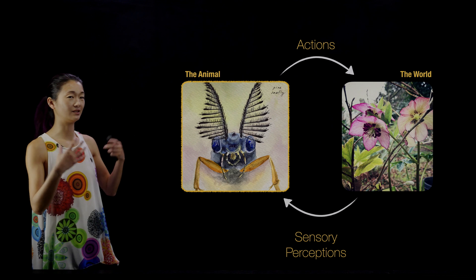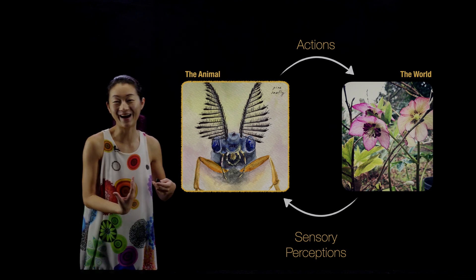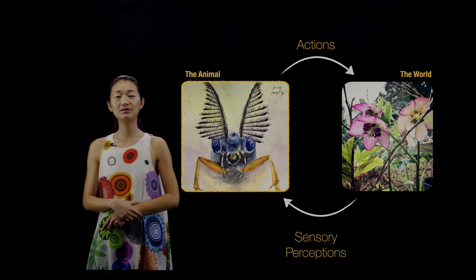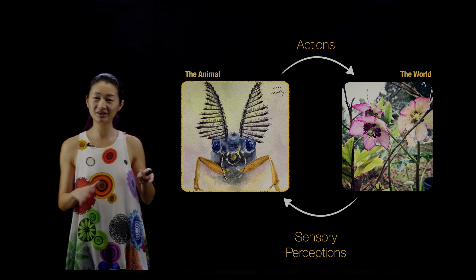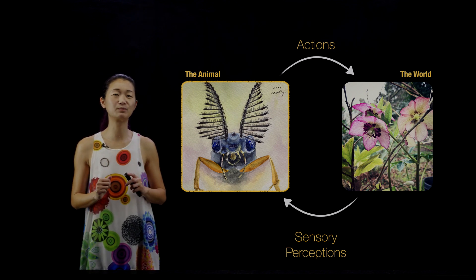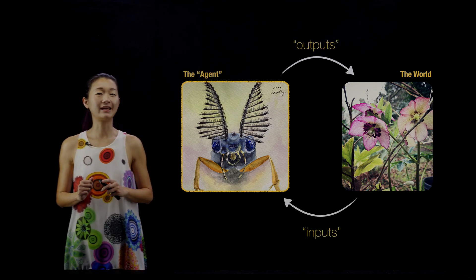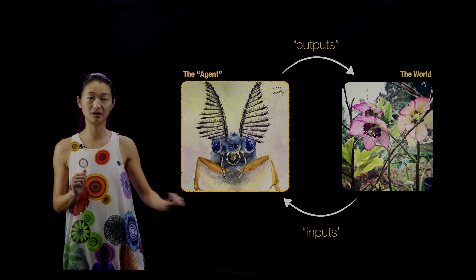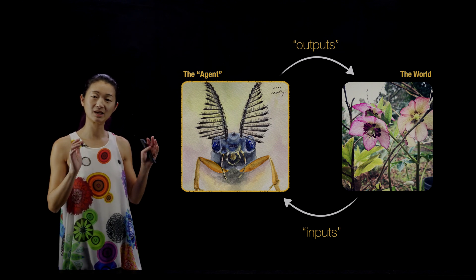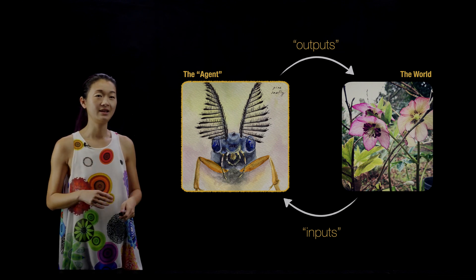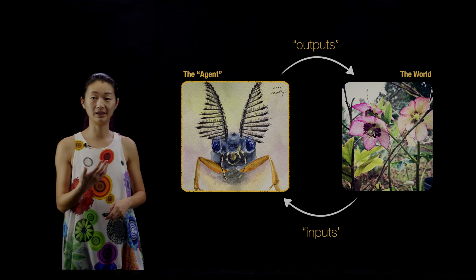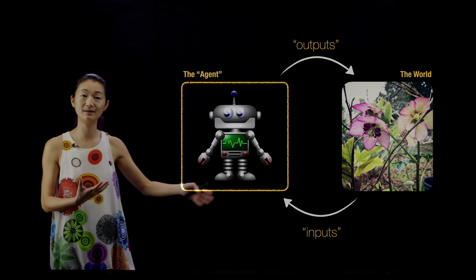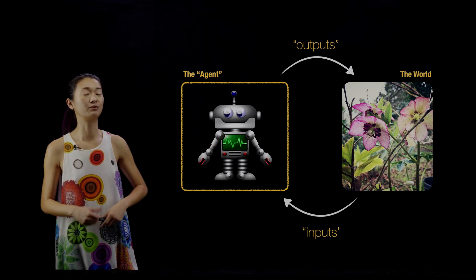To go back to the picture of the animal acting on the world and the world pushing back through sensory perceptions, I'm going to do a little sleight of hand. Instead of the animal I'm going to call it the agent, and our actions are our outputs and our sensory inputs are our measurements or inputs. This is becoming more like an engineering diagram, where the agent — rather than being an animal — could very well be a robot with a computer inside that takes inputs, computes something, and has outputs on the external world.